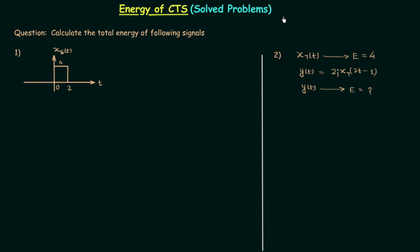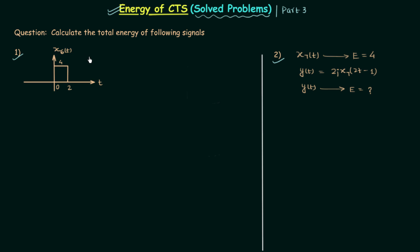In the previous lecture we calculated the total energy following the conventional approach. Now in this lecture, which is Part 3 of solved problems based on the energy of continuous time signals, we will solve two problems. In the first problem the signal is x6(t), and by the help of this signal we will understand the effect of time shifting, time reversal, time scaling, amplitude reversal, and amplitude scaling on the total energy of a continuous time signal.